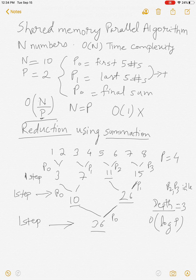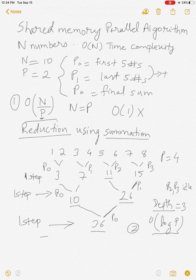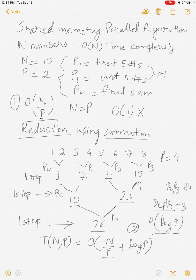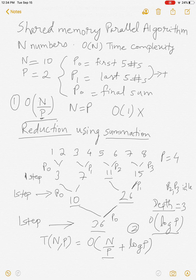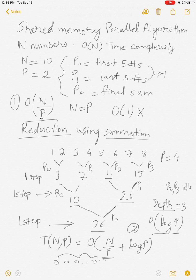This introduces the log P term. Combining equation one and equation two, the time complexity to add n numbers using P processors is O(n/P + log P). The n/P term is required because the actual number of elements can be much greater than P, so each processor must sequentially go through n/P numbers and keep adding them.